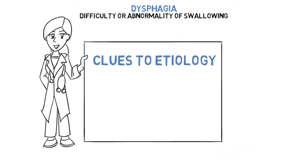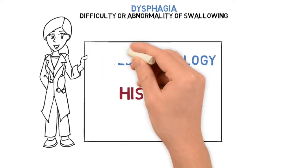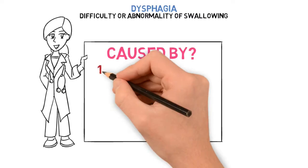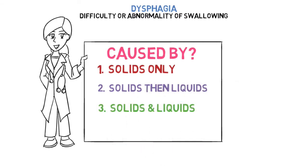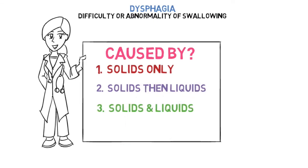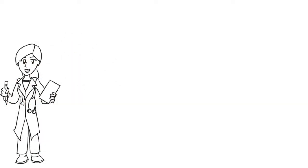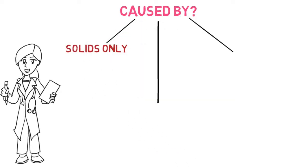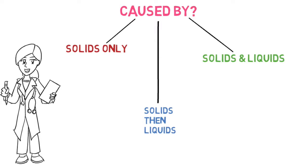We need to look for clues to the etiology, and how we're going to find them is the history. The key question we have to ask is: is dysphagia caused by number one, solids only; number two, solids then liquids; or number three, solids and liquids? Let's go over each of these three categories in detail.